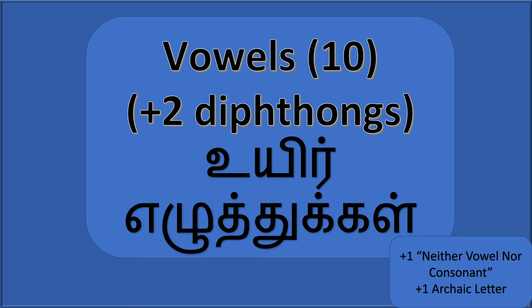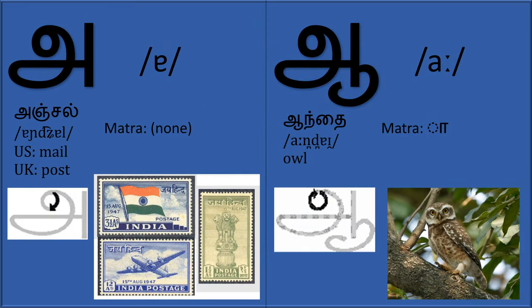We will look at the vowels first. There are 10 vowels, 2 diphthongs, 1 neither vowel nor consonant, and 1 archaic letter in this section.